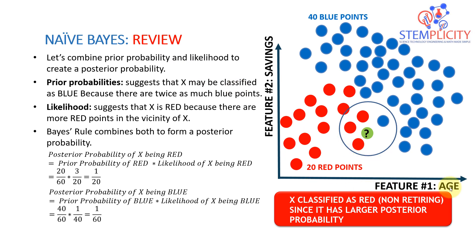So again, we have two features: age on the x-axis and savings on the y-axis, and we came up with two classes. We have 40 blue points for people who are eligible to retire and red points for people who are not eligible to retire yet. We came up with a new point which we don't know which class to classify it to — should it be blue or red? The objective is to make that guess using the Naive Bayes classifier.